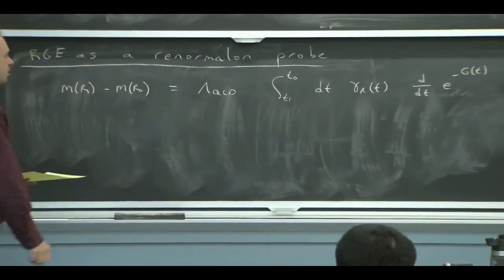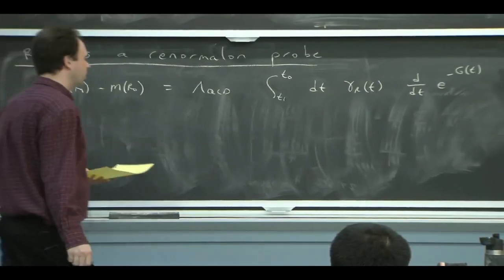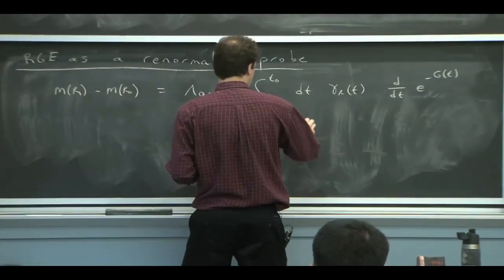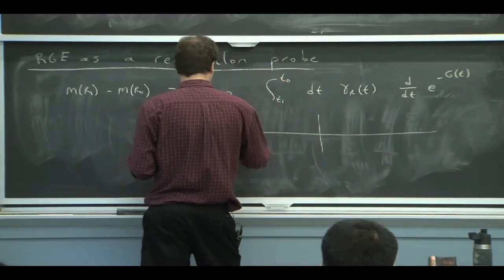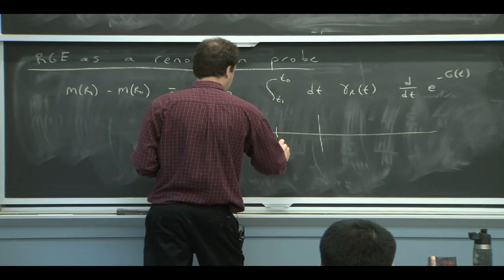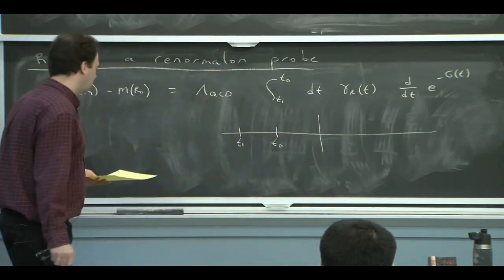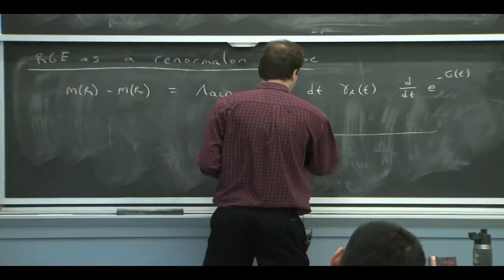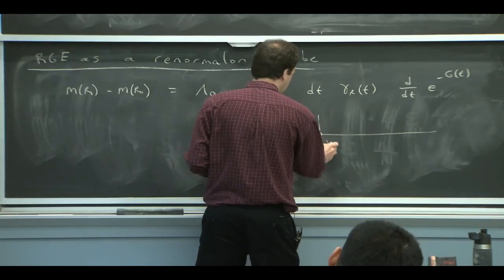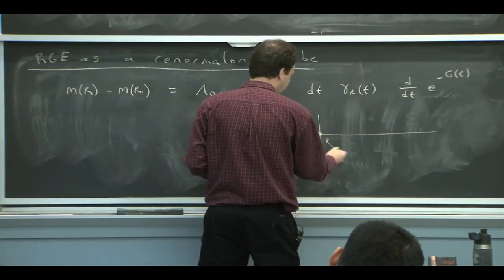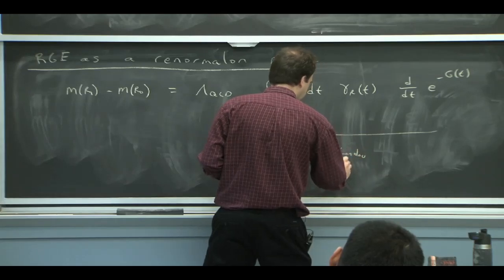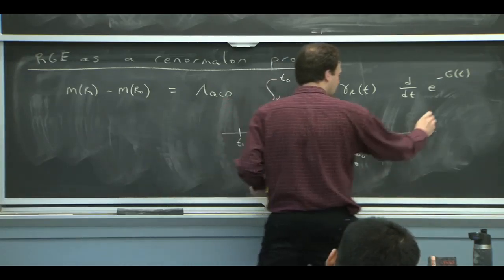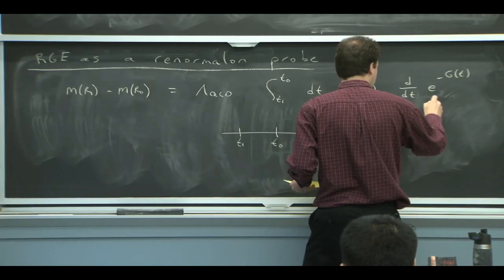And let's consider what this integral actually is doing in the complex T plane. So the T's are negative, and so they look like this. Because the Landau pole, where the coupling blows up, is where the T goes to 0. So the Landau pole is at the origin. So this is what the complex T plane looks like.